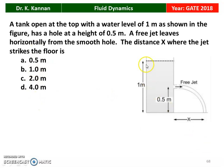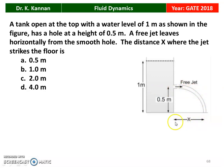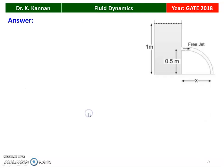The distance x where the jet strikes the floor is to be found — we have 4 options. This is the tank; the head of water is 1 meter, kept constant. At 0.5 meter there is a hole. Through the hole, the water jet is leaving and striking the ground. We have to find the distance at which it strikes the ground. The answer is 1 meter, and we will see how in the next slide.